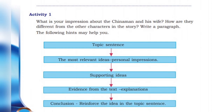When you write a paragraph, the main thing that we must have is a topic sentence. And this topic sentence is the main idea. The second important thing is supporting details. You have to write the supporting sentences into the topic sentence. There you have to write the most relevant ideas and also your personal impressions can be written.